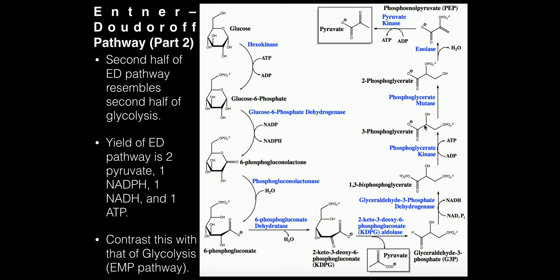3-phosphoglycerate is isomerized into its constitutional isomer by phosphoglycerate mutase, which generates 2-phosphoglycerate. The phosphate on the 3-position is moved to the 2-position. Then 2-phosphoglycerate is dehydrated by enolase, which removes the hydroxyl group and forms a double bond — essentially an elimination reaction where water goes away — generating phosphoenolpyruvate, which is our highest energy metabolite in glycolysis.